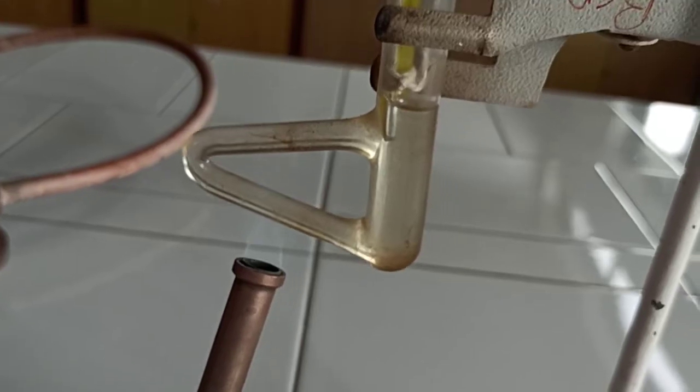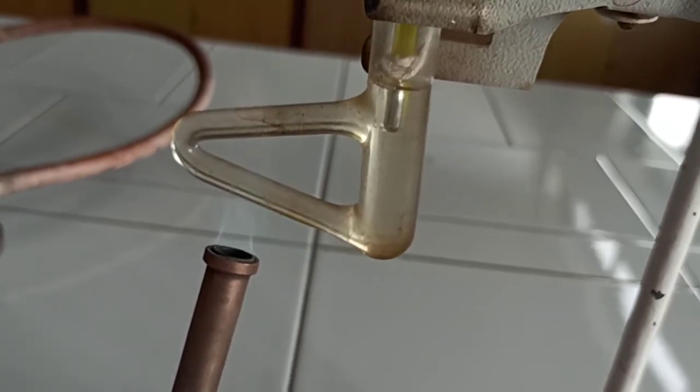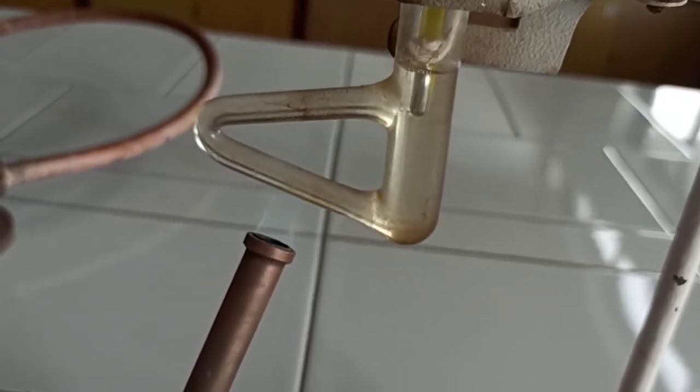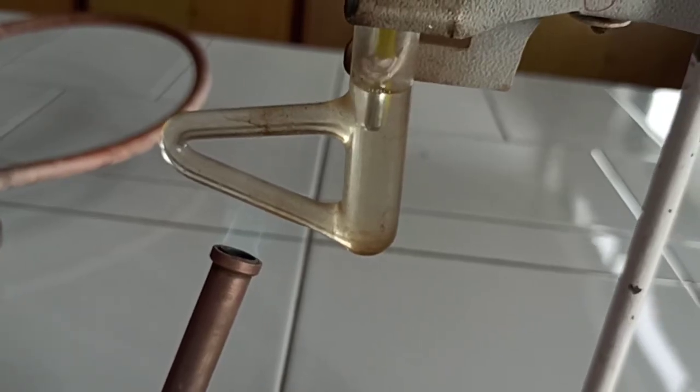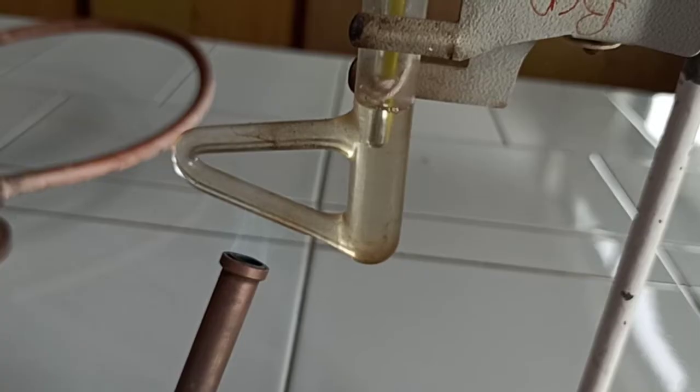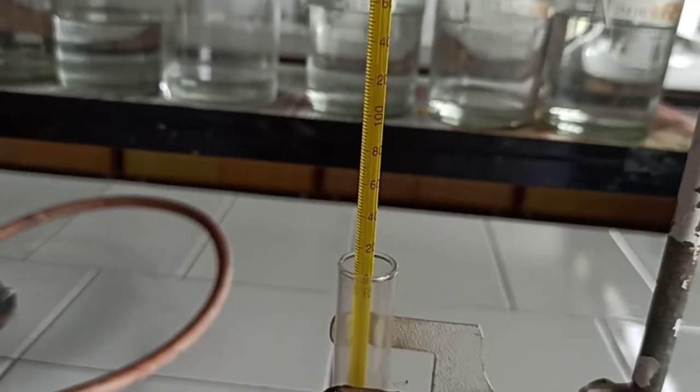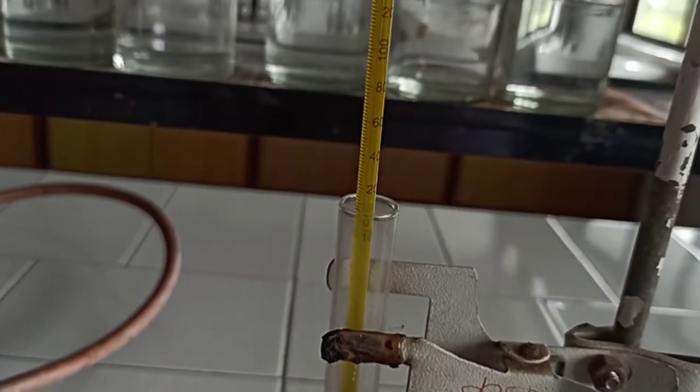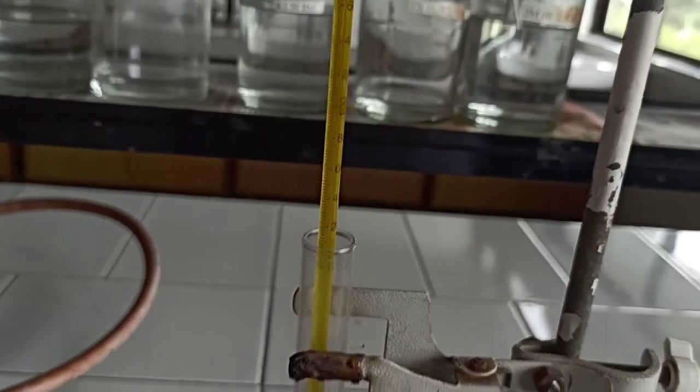See, we are continuously heating this tilts tube and there is a circulation of that liquid paraffin. See, the mercury goes upward. That means temperature gets rise.